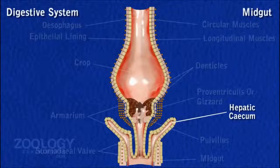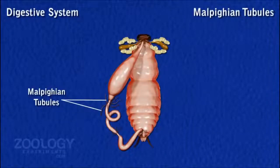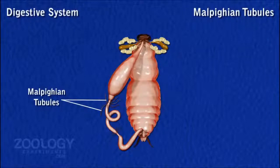Malpighian Tubules: From the junction of midgut and hindgut, 80 to 150 very narrow, thread-like, yellow-colored blind tubules projecting freely into the haemocoel are called Malpighian tubules.